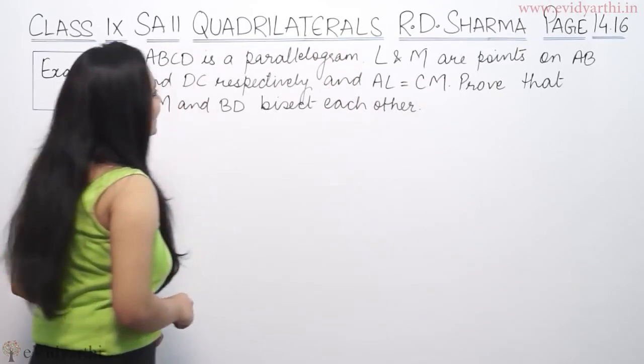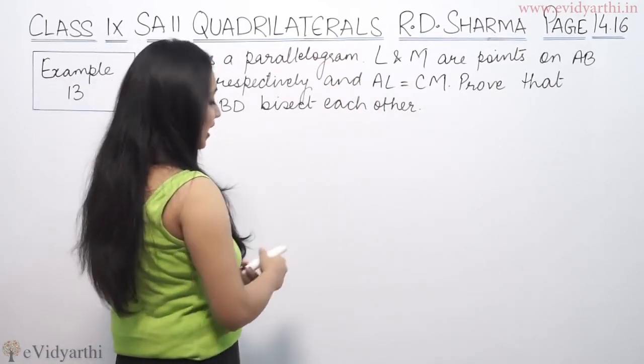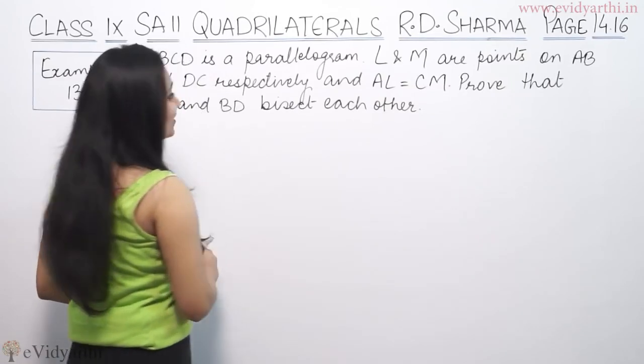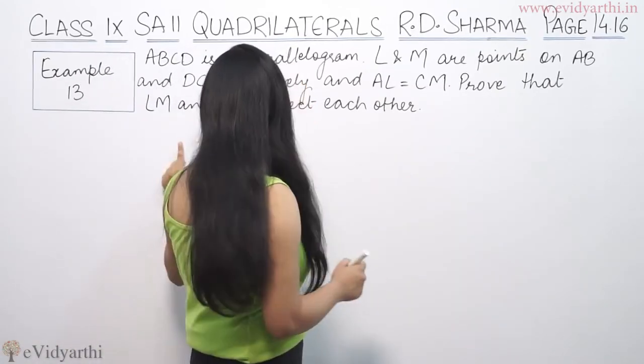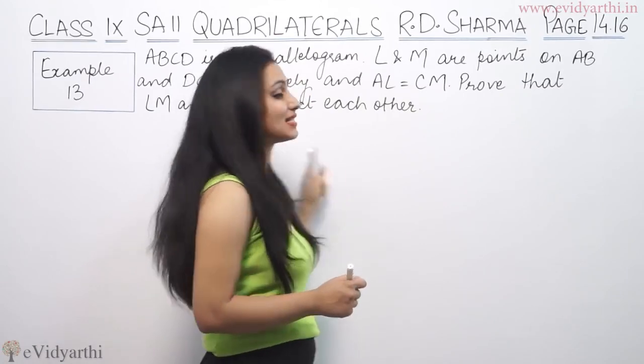This says if ABCD is a parallelogram and L and M are points on AB and BC respectively and AL is equal to CM, we have to prove that LM and BD bisect each other.